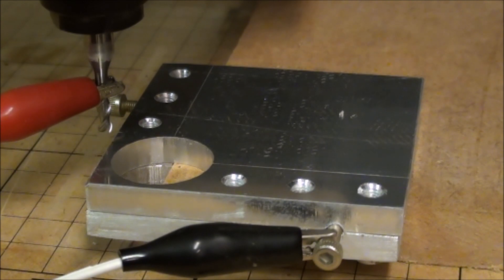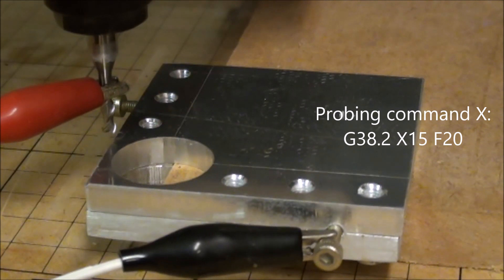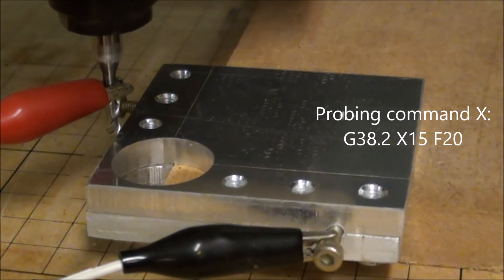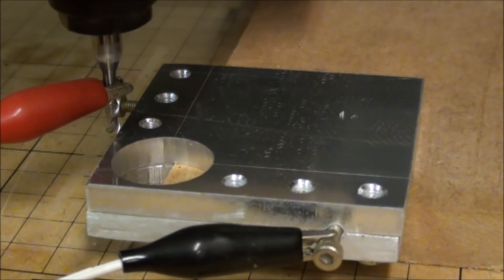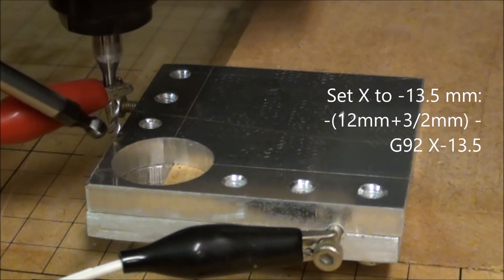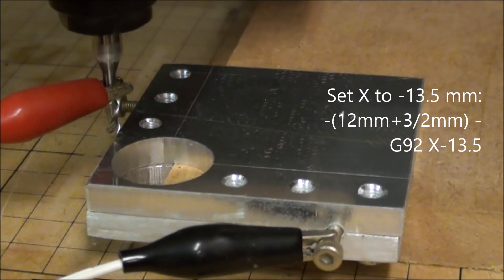Now I'm ready to do the same on the x-axis. I have lowered the bit so it is below the surface of the aluminum so it will touch, and I will be using a slow speed rate of 20. Okay, here we go. And then again using G92, I will set the x so that x zero will be here, so it will be minus the 12 millimeters and the half diameter of the bit.